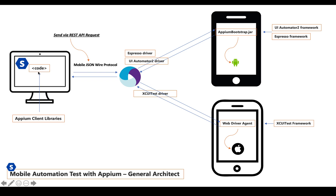Our code needs to use Appium client libraries. It depends on which language you are using in automation testing — we have Node.js, Java, Python — and we need to download the appropriate Appium client library. These implement the Mobile JSON Wire Protocol and can communicate with the Appium server. This is the client side, this is the server side, and they communicate via the Mobile JSON Wire Protocol.